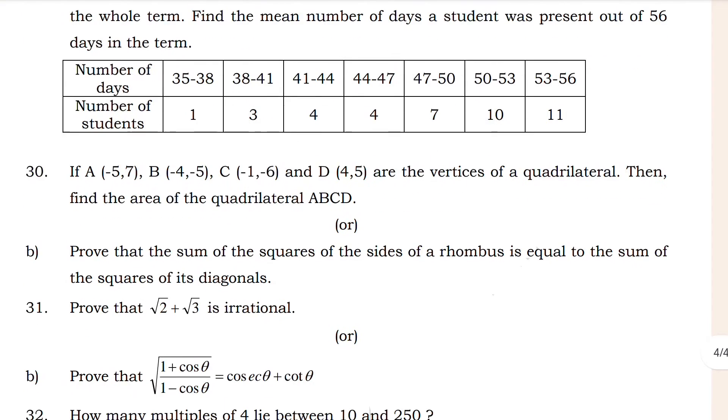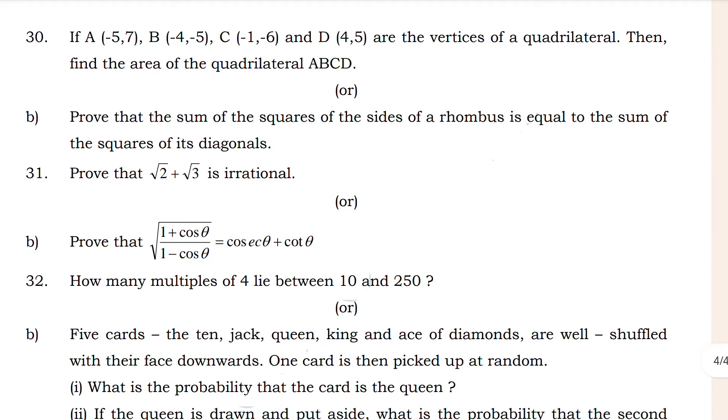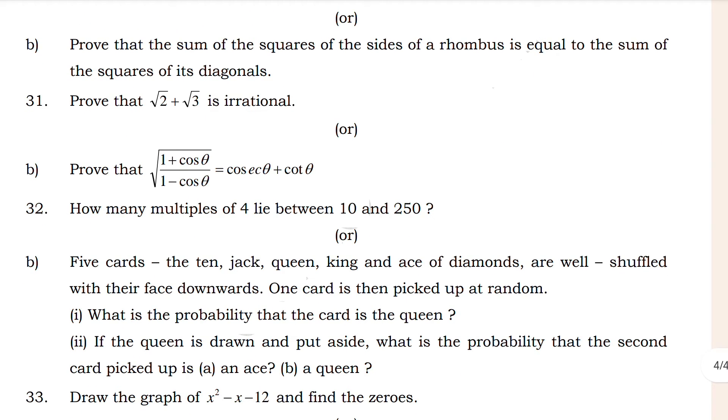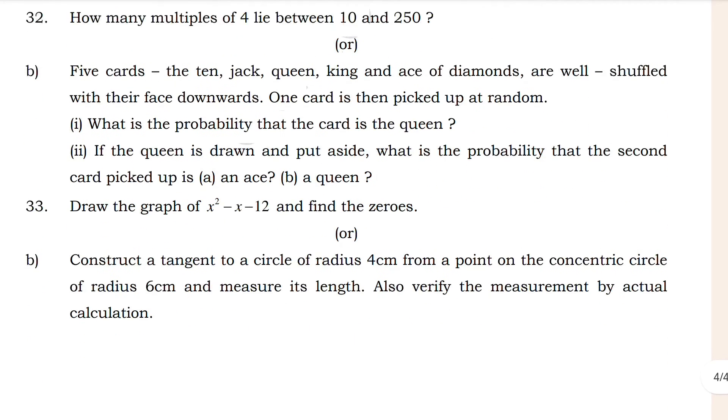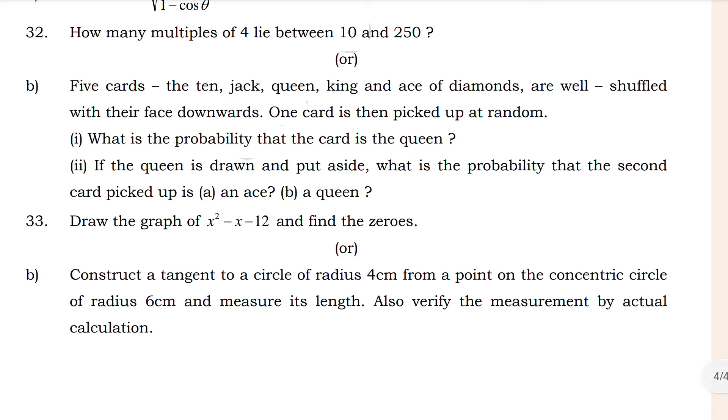Let's see 31. The vertices of quadrilateral, it's also important. And 31 is very very important: prove that root 2 plus root 3 is irrational. This is a very important question, you have to mark that one. 31a and b, both of them.